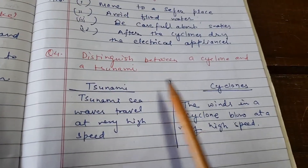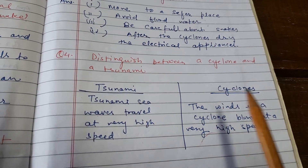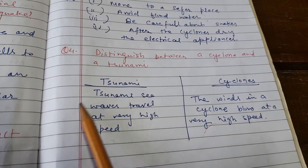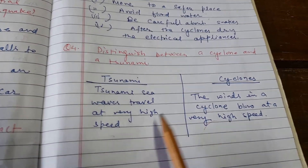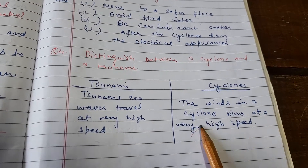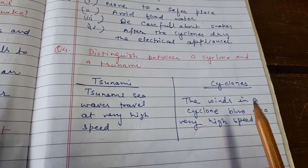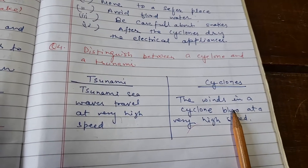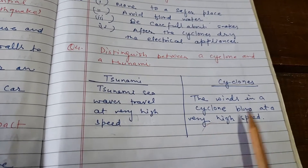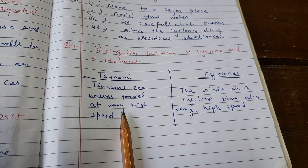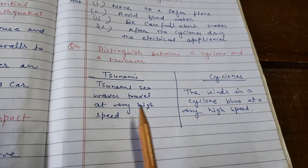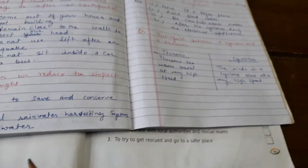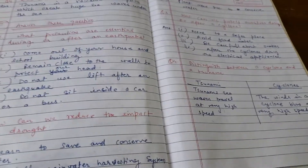Distinguish between cyclone and tsunami. Tsunami sea waves travel at a very high speed. In a cyclone, the wind blows at a very high speed. In tsunami, water waves travel at high speed; in cyclone, wind travels at high speed.